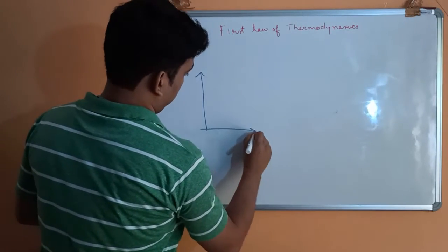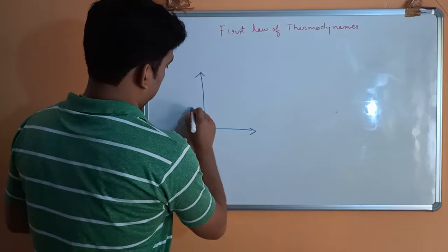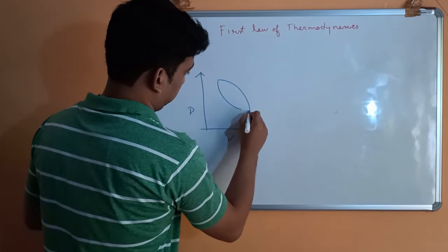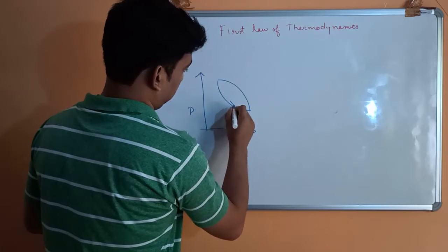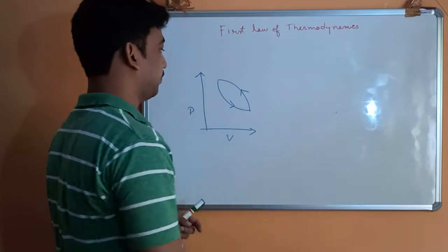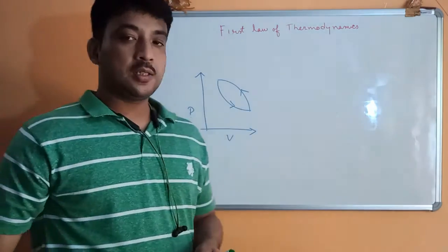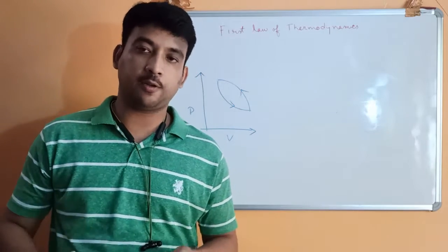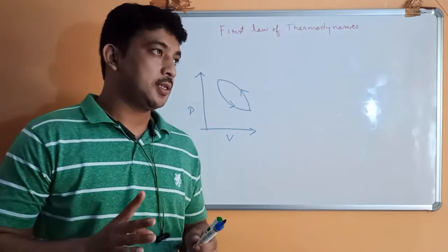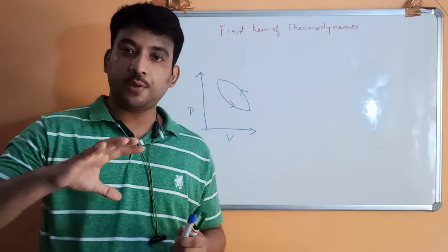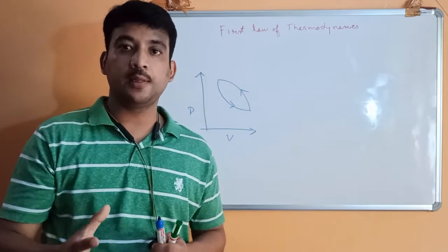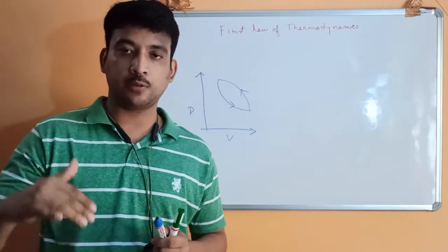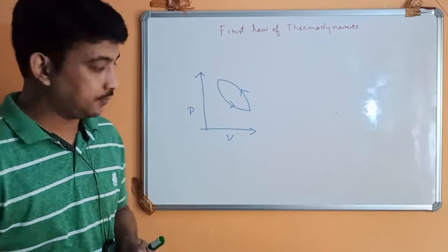Let us assume in a PV cycle diagram a cycle. In the case of a cycle, according to Joule's experiment and Joule's statement, it says that all the heat transferred in that cycle is directly proportional to the work transferred in the cycle.